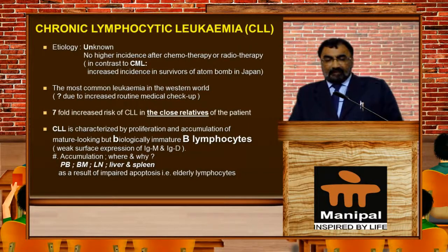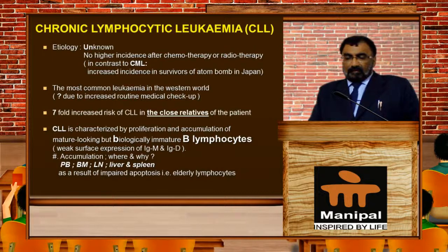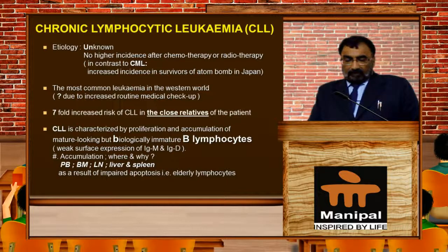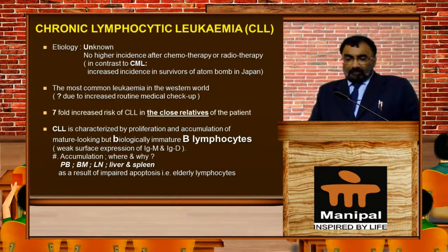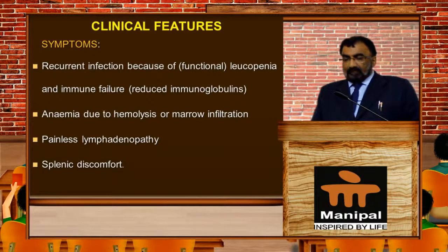There is a sevenfold increased risk of CLL in close relatives of patients. CLL is characterized by proliferation and accumulation of mature-looking but biologically immature B lymphocytes — accumulating into the peripheral blood, bone marrow, lymph nodes, liver, and spleen — as a result of impaired apoptosis of elderly lymphocytes.